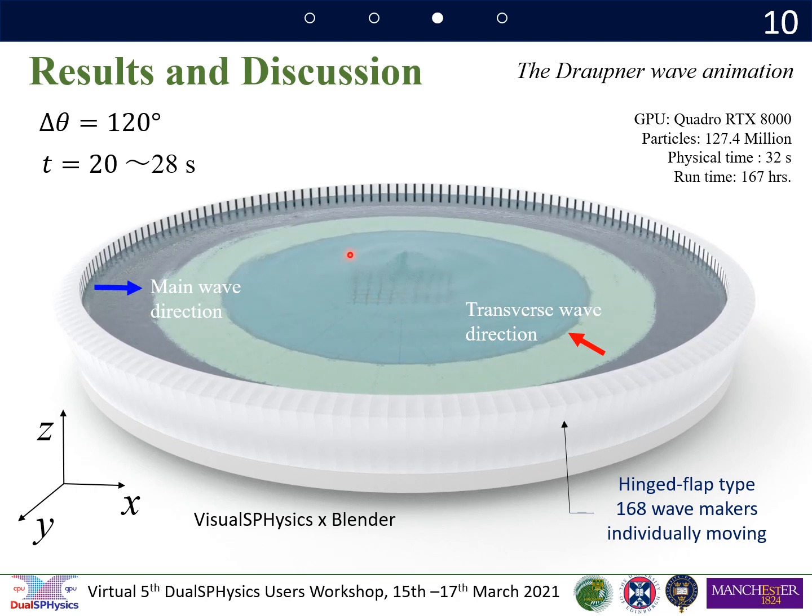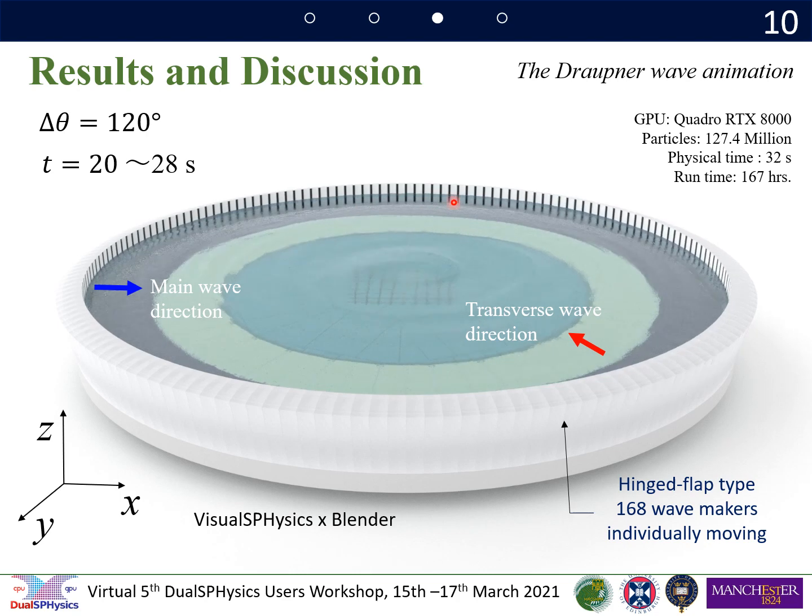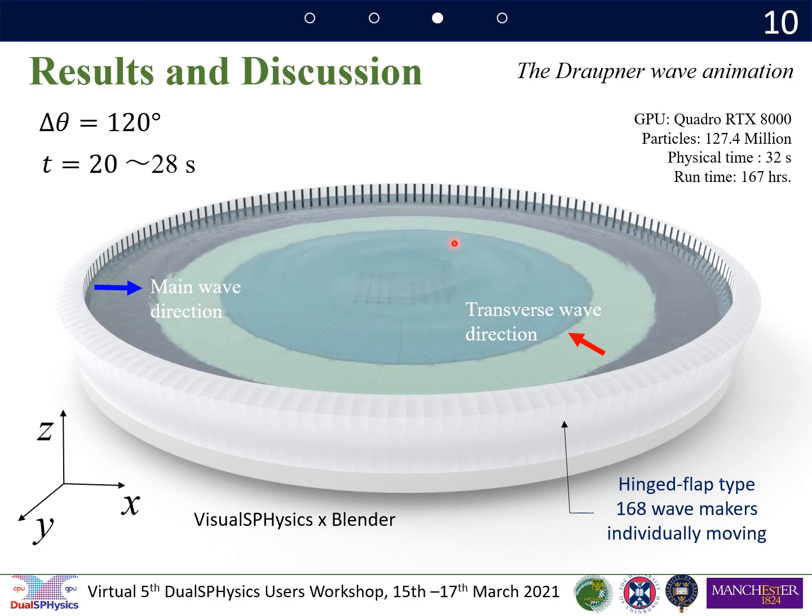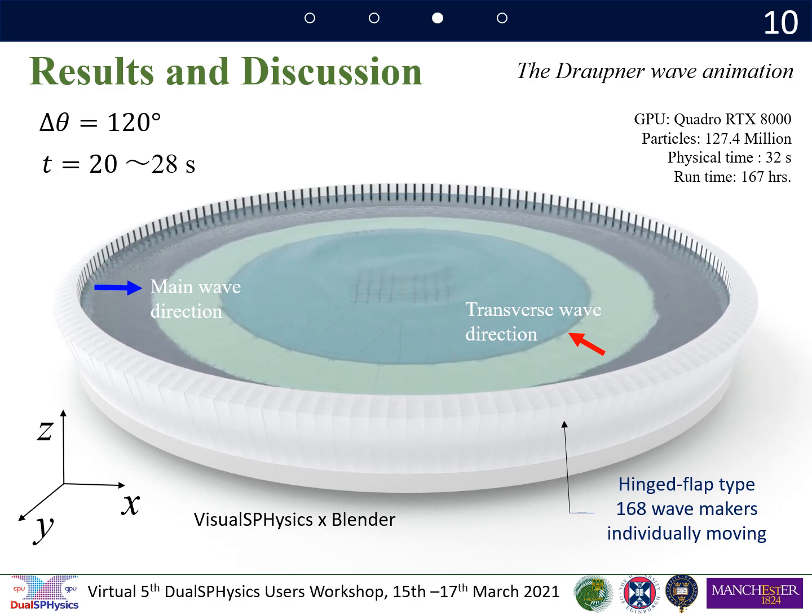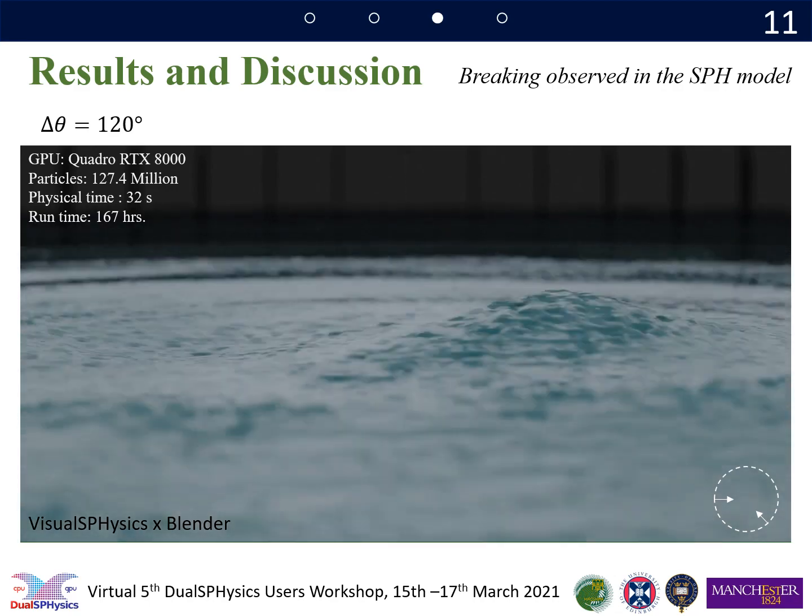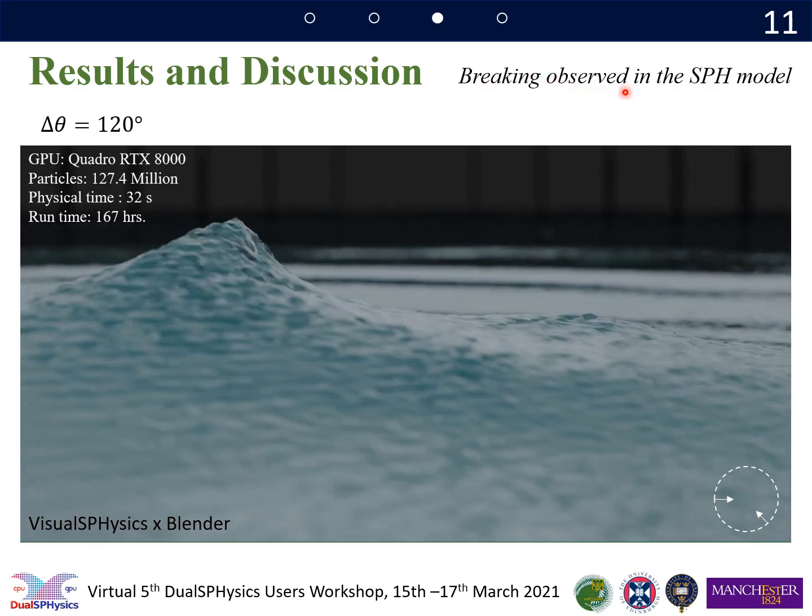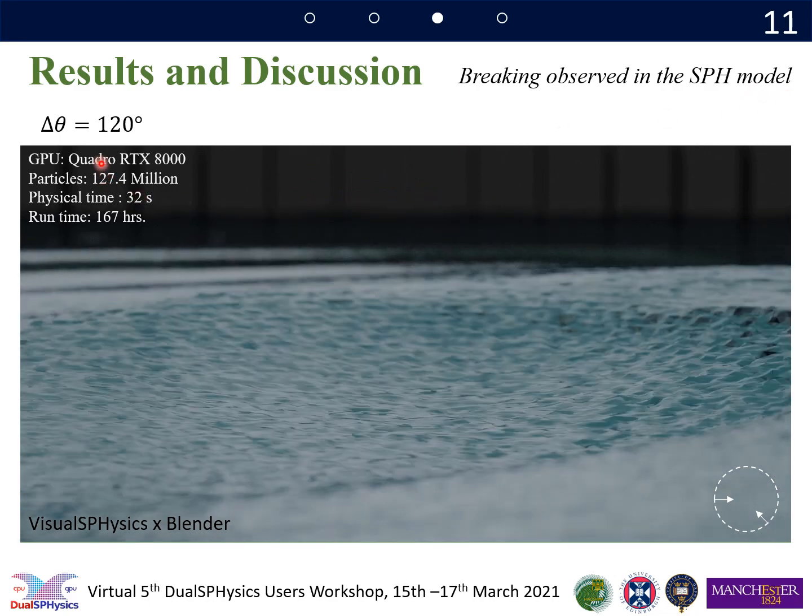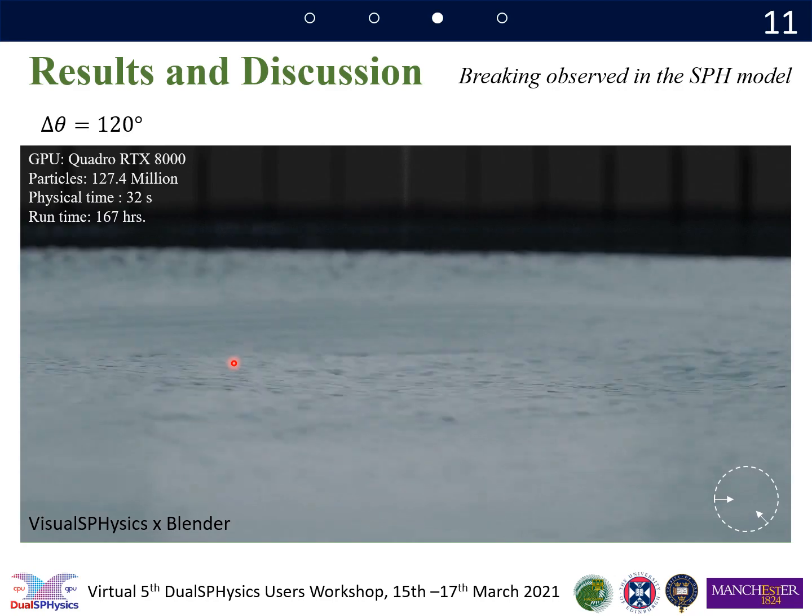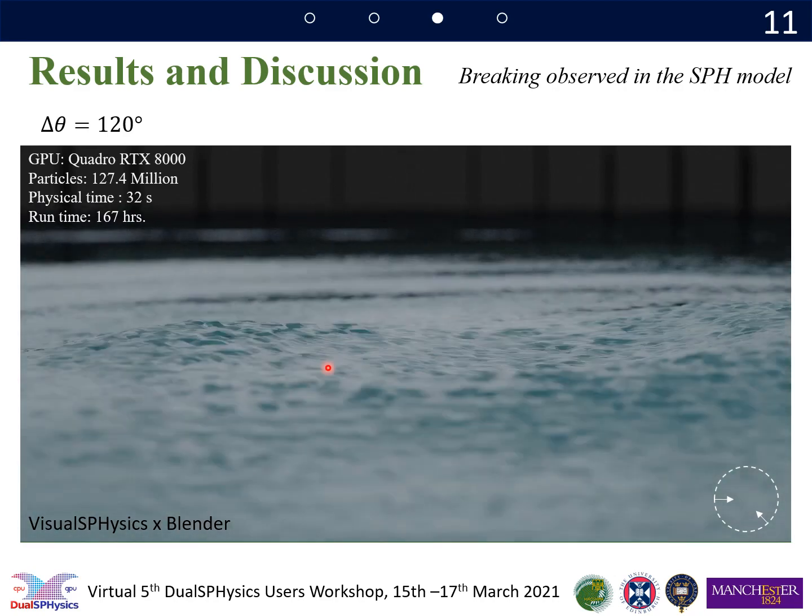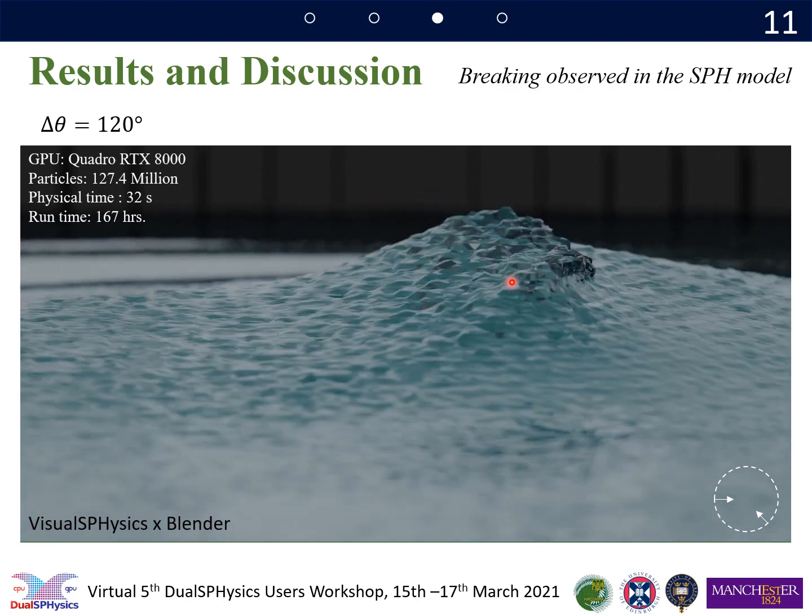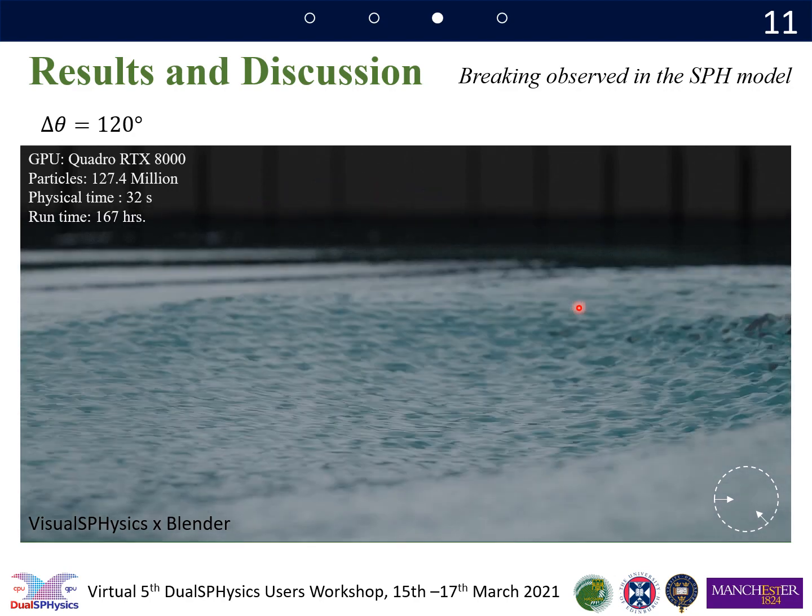And we can also see transverse waves propagating with this direction shown as a red arrow. And at the time of focusing, we can see the Draupner wave was reproduced at the center of wave basin, as we can see here. And in this slide, we represent the breaking observed in the SPH model for the crossing sea states. We can see breaking observed in this animation is less violent.